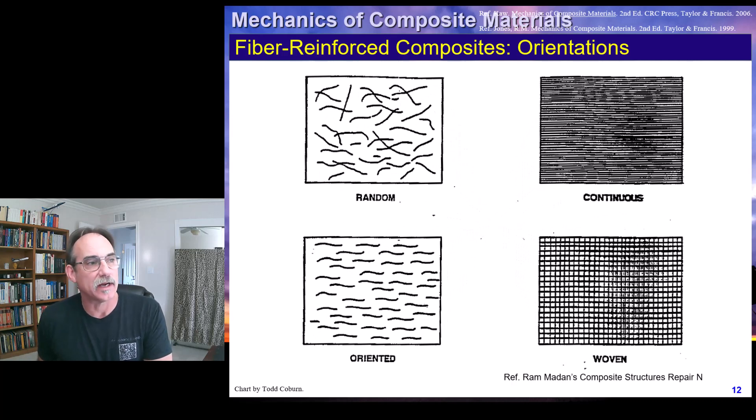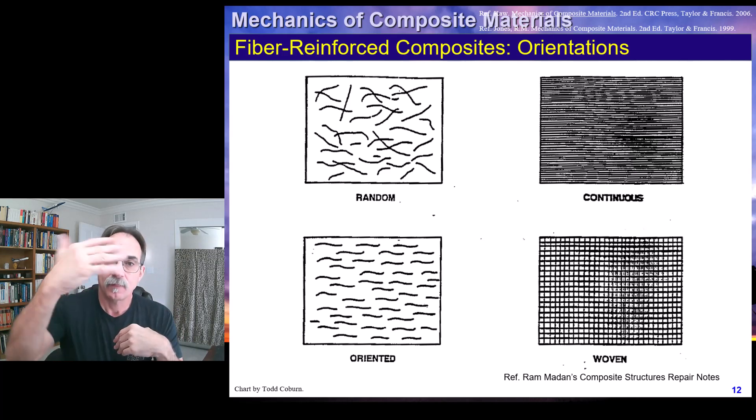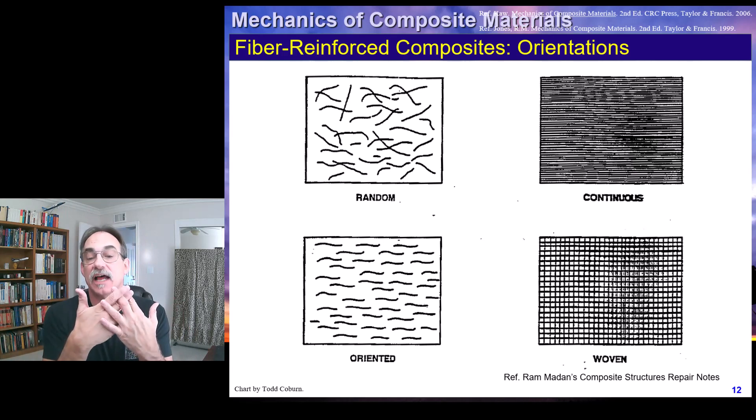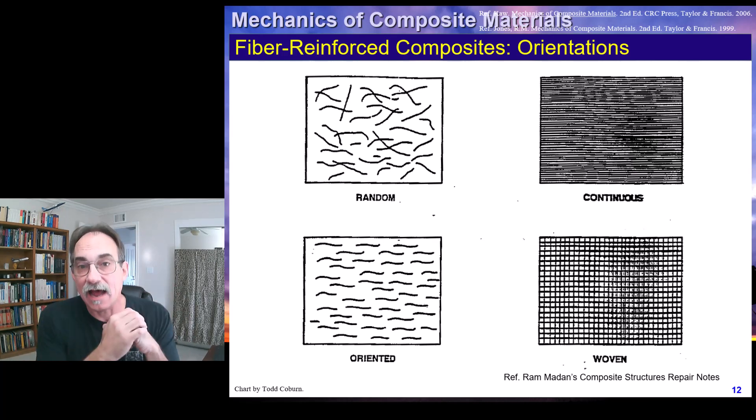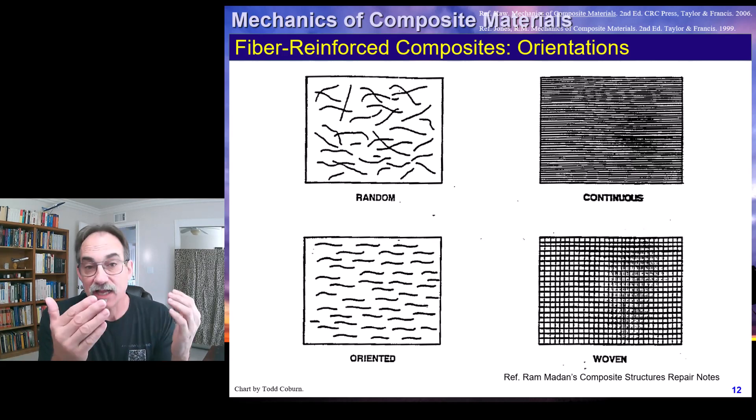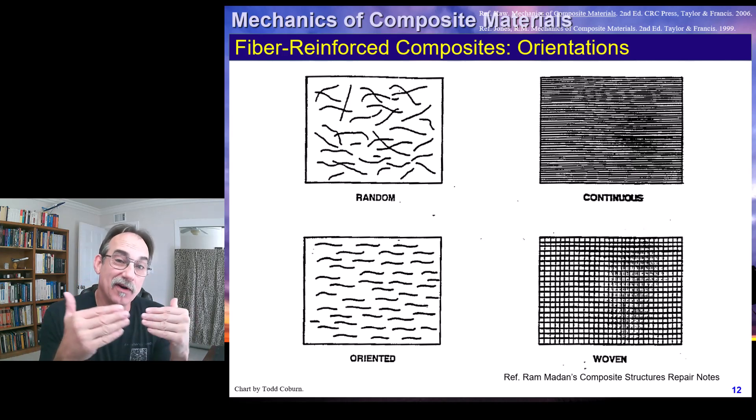This is just another quick look as we're getting started at some of the different fiber reinforced products we might have. One of the common ones will be a continuous unidirectional product like we see upper right. And the next most common is probably a woven one where we have continuous fibers in one direction, continuous fibers in another direction, and woven together just like your t-shirt.